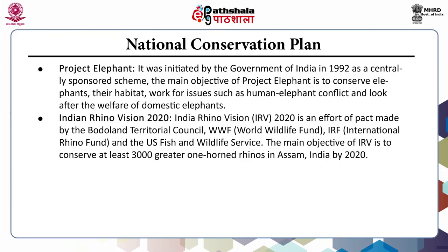The third project is Indian Rhino Vision 2020. Indian Rhino Vision is an effort of a pact made by the Bodoland Territorial Council, WWF, International Rhino Fund, and the US Fish and Wildlife Service. The main objective of Indian Rhino Vision is to conserve at least 3,000 greater one-horned rhinos in Assam, India by 2020.